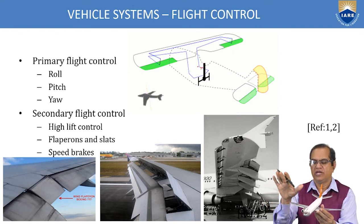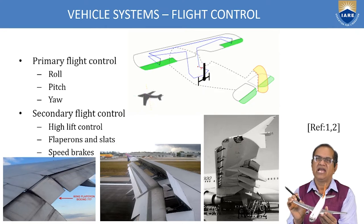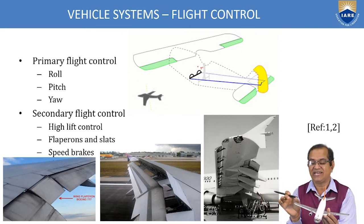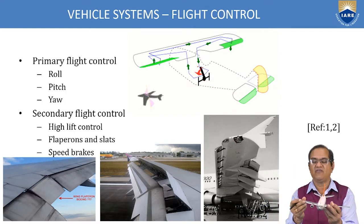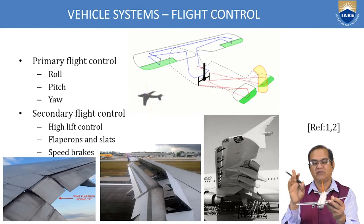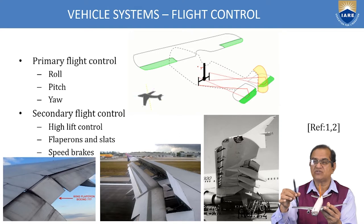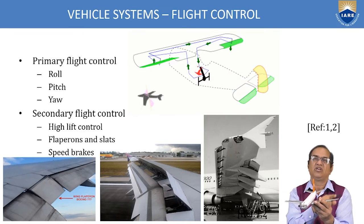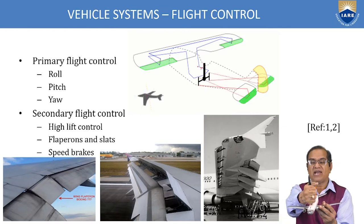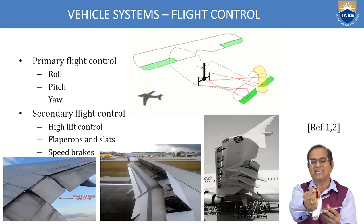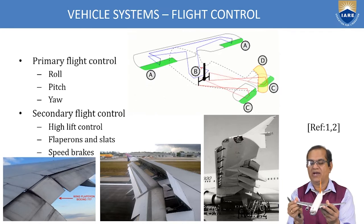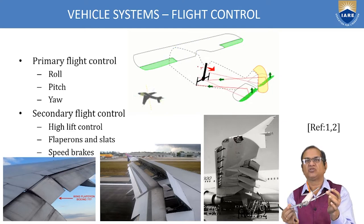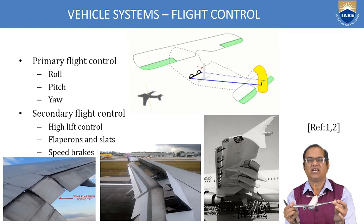For roll control, the ailerons are used. Ailerons are fitted on the wing at the tip, at the trailing edge on both sides, but they move in opposite directions. If you want to roll the aircraft to the right, the right wing needs less upward force and the left wing needs more. To get more upward force on the left wing, the left aileron goes down while the right aileron goes up. The pilot turns the stick accordingly, generating more lift on one side, causing the aircraft to roll. This is called the roll moment, controlled by the ailerons.